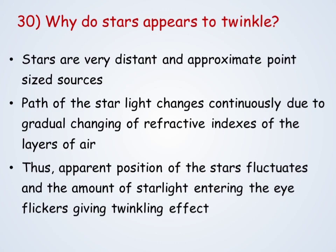Why do stars appear to twinkle? Stars are very distant and approximate point-size sources. The path of starlight changes continuously due to the gradual changing of refractive indices of the layers of air. Thus, the apparent position of the stars fluctuates and the amount of starlight entering the eye flickers, giving a twinkling effect.